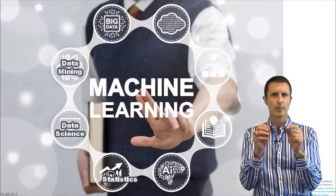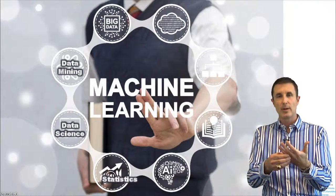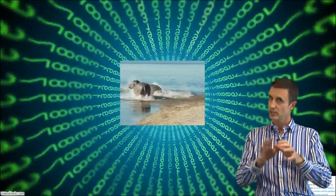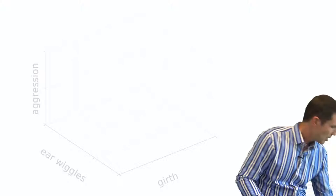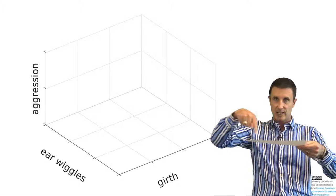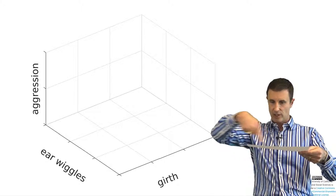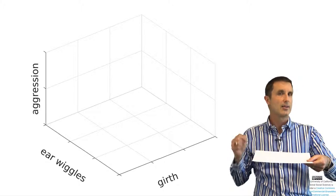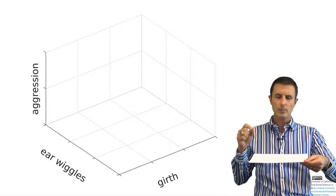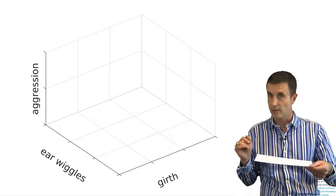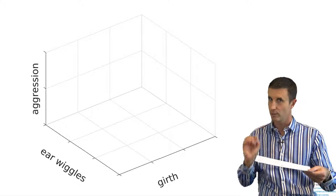Let me illustrate the problem of regression. Say I've been out in the field and I've measured things about hippopotamuses — the girth of the hippopotamus and maybe how many times it wiggles its ears. I can view each of those points as sitting on a plane. This axis might be the girth of my hippopotamus and this axis over here might be the number of times the hippopotamus wiggles its ears in an hour. And then I've also measured the aggression of my hippopotamus — if you've ever been near a hippopotamus, you know that's an important thing to know.